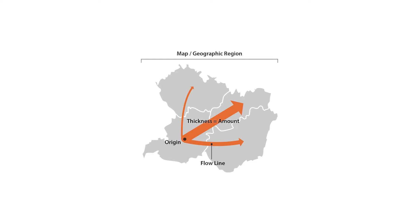Flow maps are drawn from a point of origin and branch out their flow lines. Arrows can be used to show direction, or if the movement is incoming or outgoing. Drawing flow lines without arrows can be used to represent trades going back and forth. Merging or bundling flow lines together and avoiding crossovers can help to reduce visual clutter on the map.